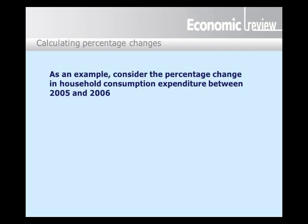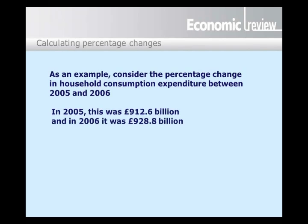The task was to take data in the table and calculate annual percentage change on consumer expenditure and on investment. Let's look at one sample calculation and think about the percentage change in household consumption expenditure between 2005 and 2006. From the table, you'll see that consumption in 2005 was 912.6 billion and in 2006 it was 928.8 billion.